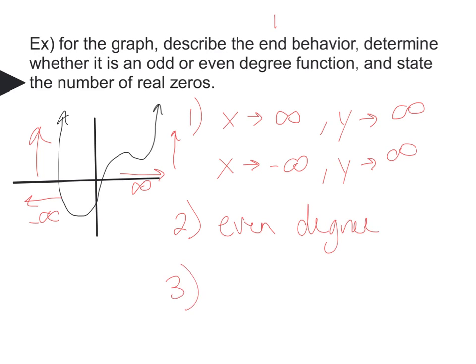And then lastly, state the number of real zeros. Well, it crosses the x-axis two times, so there will be two real zeros.